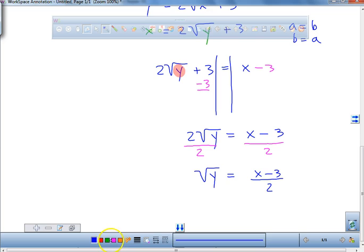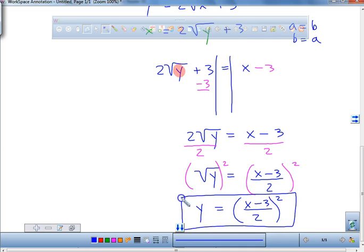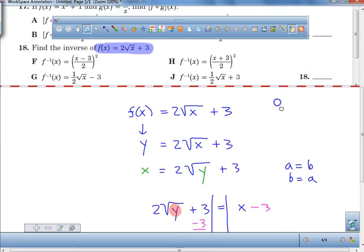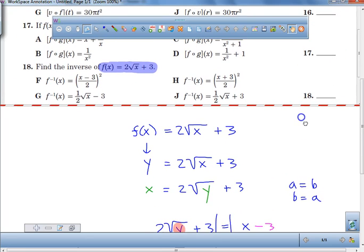Now what are we going to do? We're going to square this side and square it. My answer is y = ((x-3)/2)². Hey, there it is.